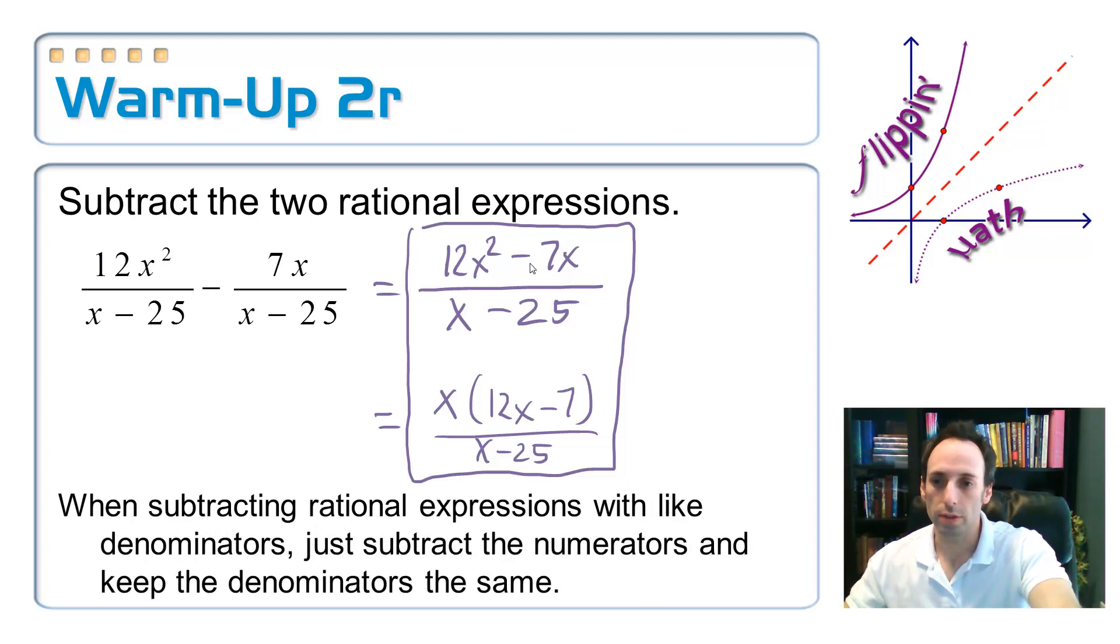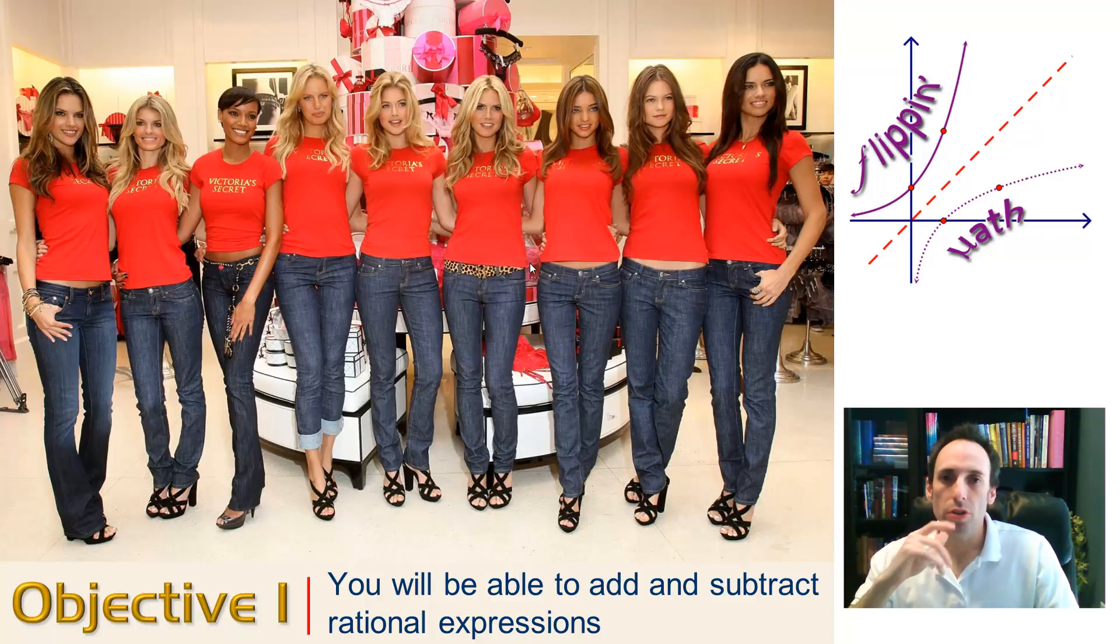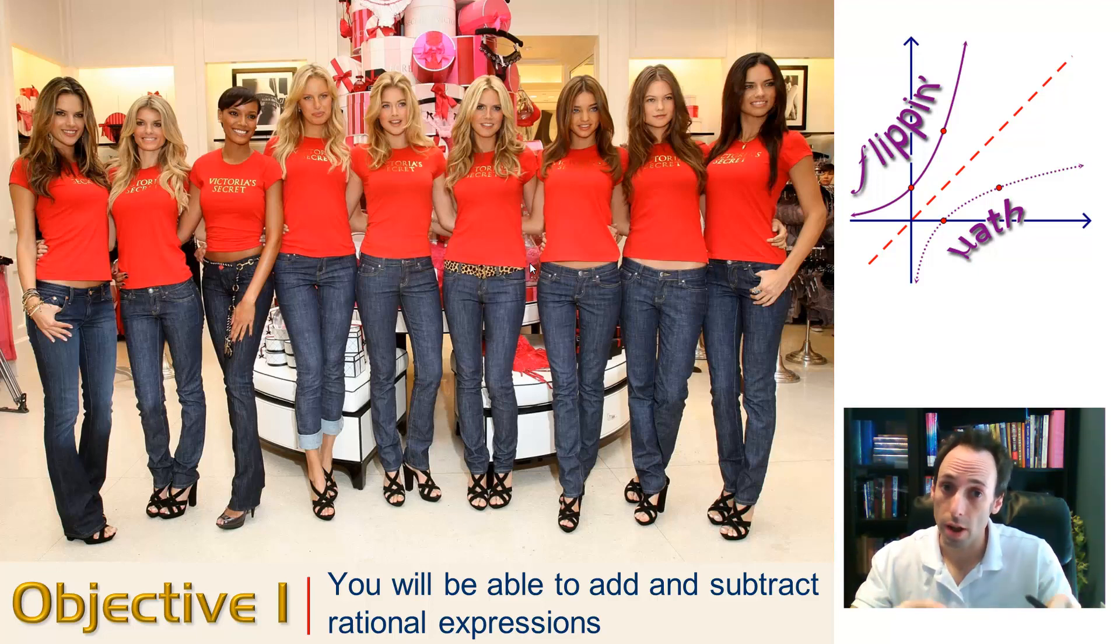So when you're subtracting two rational expressions, if the denominators are already the same, keep them the same and just subtract the tops. But I wonder what we're supposed to do when the denominators aren't the same. That's pretty much what the lesson's all about. So objective one, you're gonna be able to add and subtract rational expressions, whether the bottoms are the same or they're not.